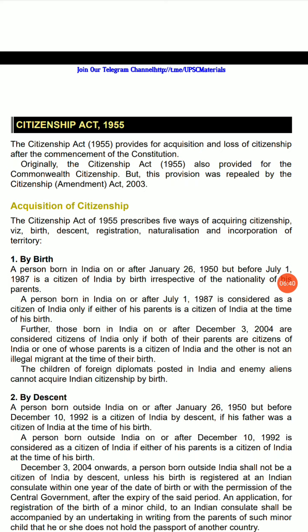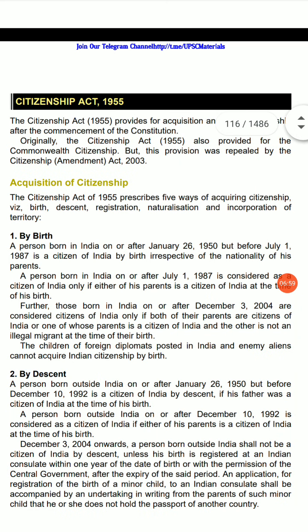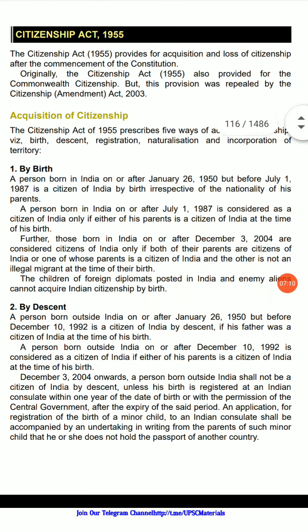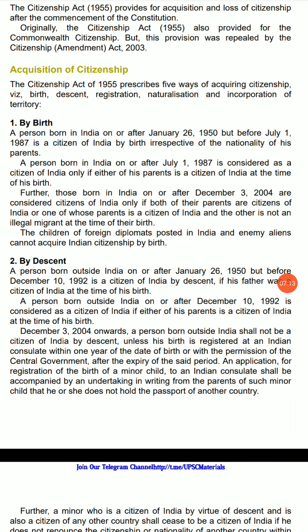The Citizenship Act of 1955 provides for the acquisition and loss of citizenship after the commencement of the constitution. The Citizenship Act of 1955 also provided for Commonwealth citizenship, but this provision was repealed by the Citizenship Amendment Act of 2003. The Citizenship Act of 1955 prescribes five ways of acquiring citizenship: birth, descent, registration, naturalization, and incorporation of territory.